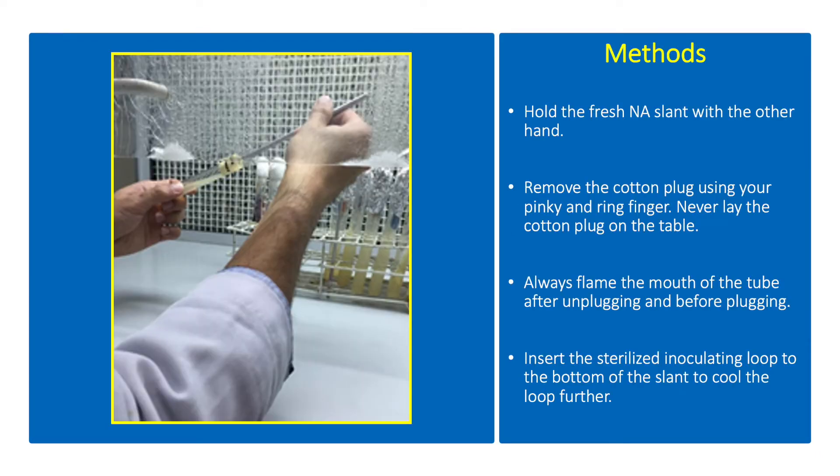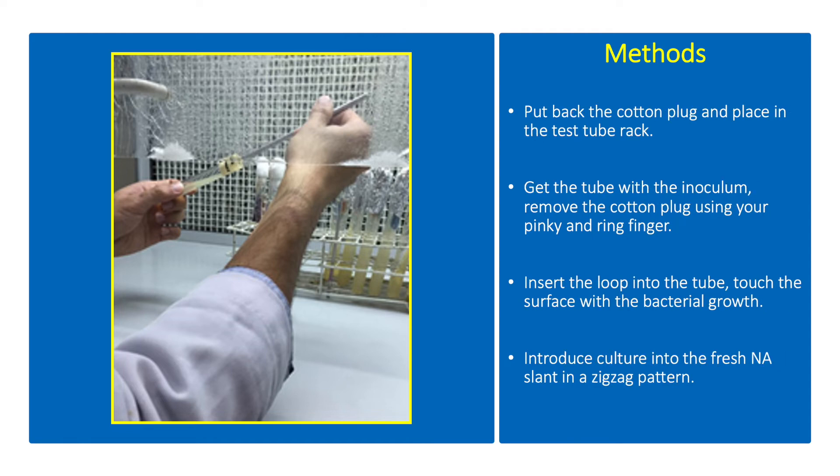Hold the fresh NA slant with the other hand. Remove the cotton plug using your pinky and ring finger. Never lay the cotton plug on the table. Always flame the mouth of the tube after unplugging and before plugging. Insert the sterilized inoculating loop to the bottom of the slant to cool the loop further. Return the cotton plug and place in the test tube rack.